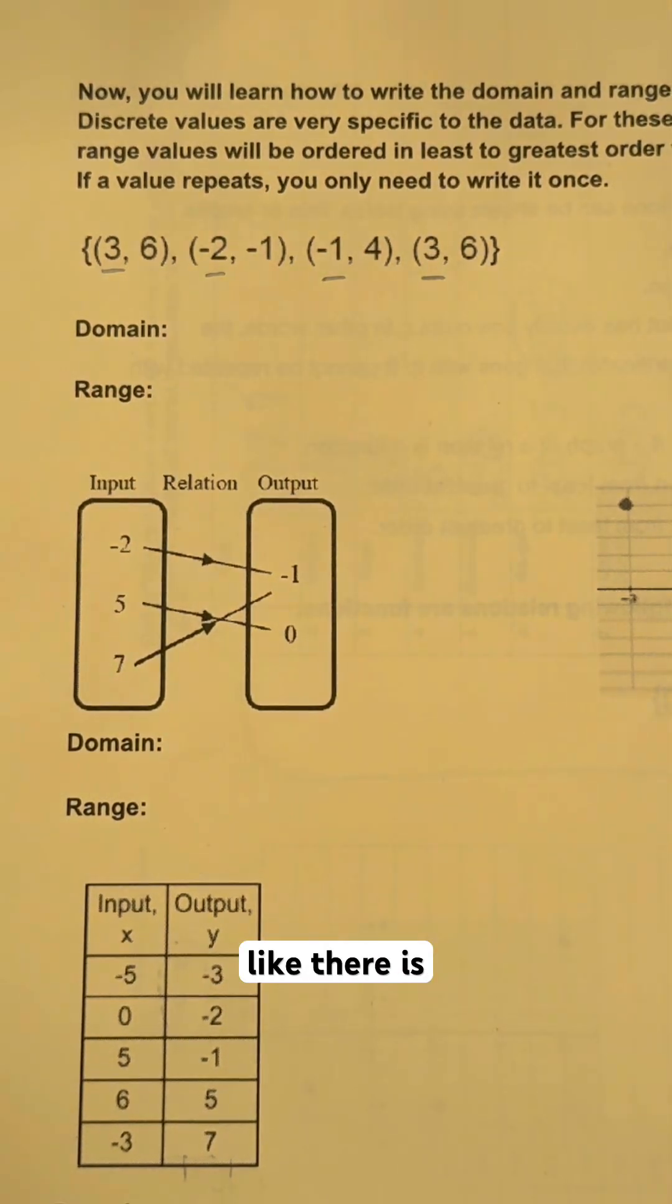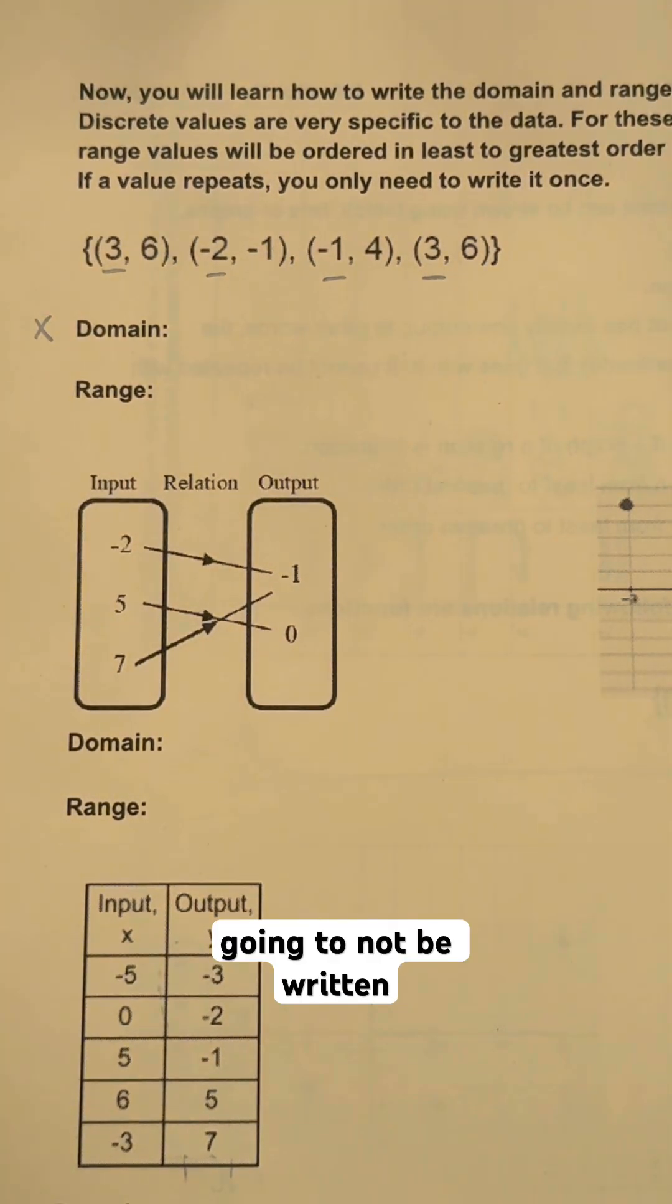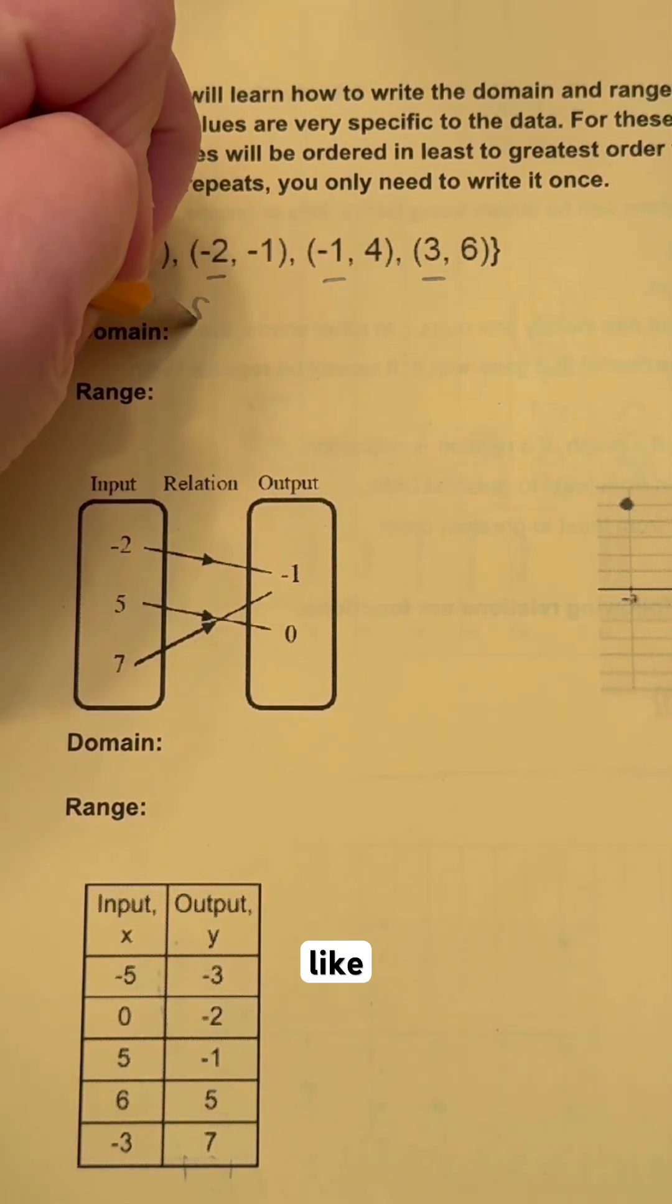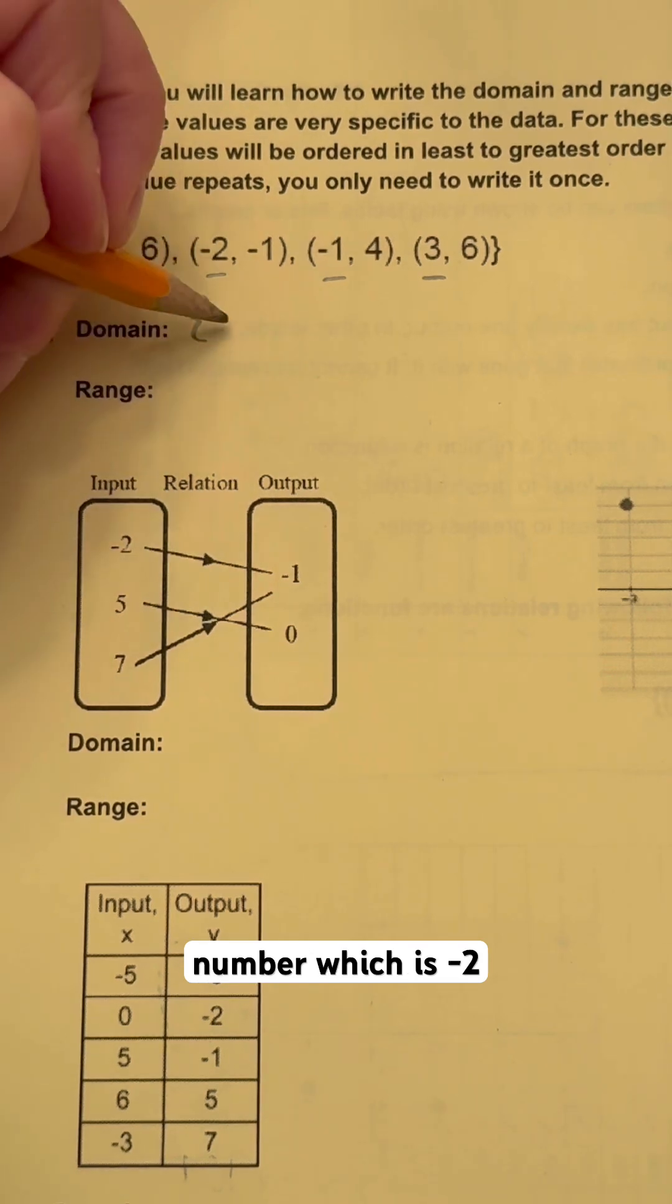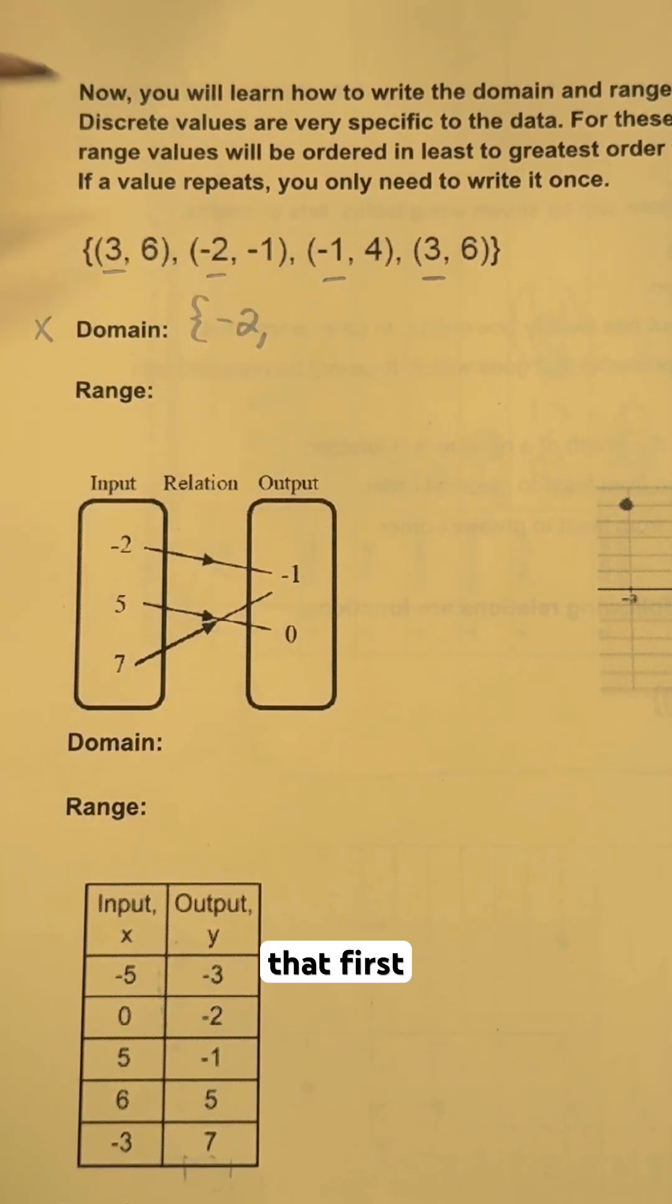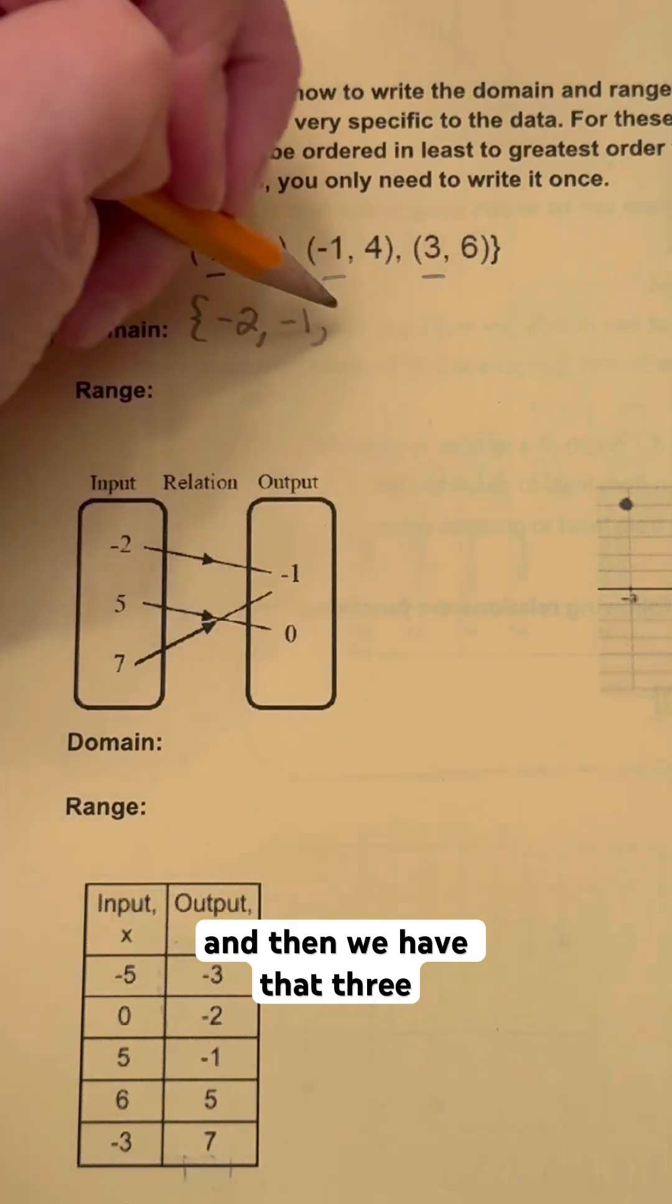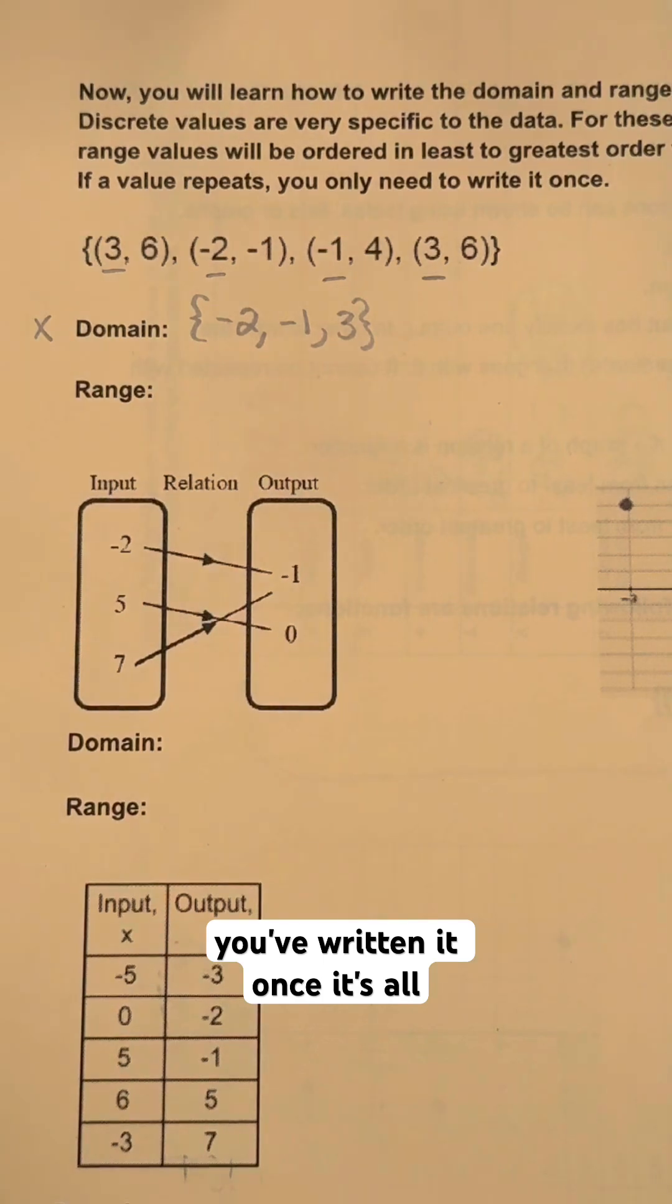If there's a repeat like there is here, there are two threes, these are going to not be written twice. So you're just gonna go from least to greatest order, you're gonna put curly brackets like this, and then you're just gonna go for the lowest number which is negative two, put that first, comma, negative one, comma, and then we have that three. And you don't need to write it twice because once you've written it once, that's all you need to do.